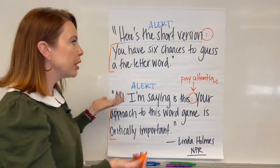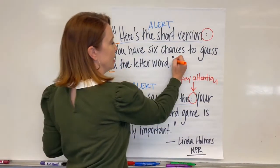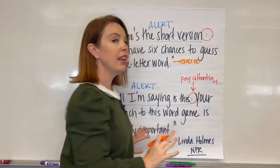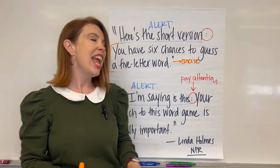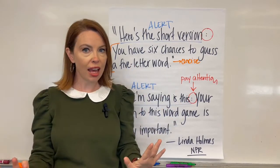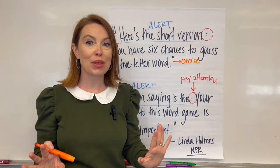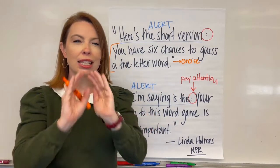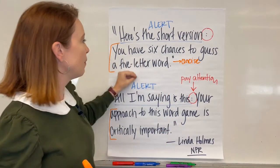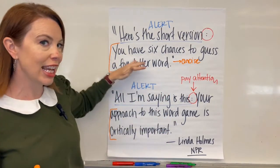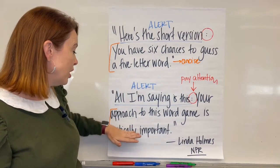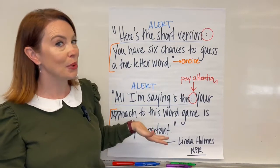This nugget is usually pretty concise, fairly short, and fairly simple. That is why the writer wants you to stop and pay attention — because something really important is coming. This nice, rounded-out, juicy little bit of information: "you have six chances to guess a five letter word," or "your approach to this word game is critically important."